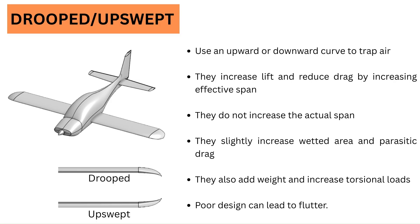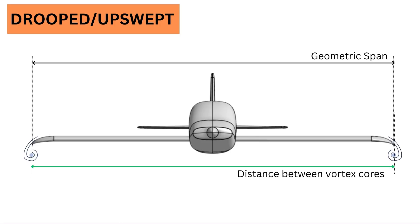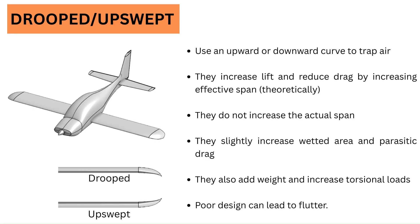Drooped and upswept wingtips: these types of wingtips attempt to trap the air with a tip that is curved upward or downward. Theoretically, they increase lift and reduce drag by increasing the effective span without increasing the actual span. However, these wingtips do slightly increase the wetted area and hence parasitic drag. They also increase weight, wing torsional loads, and can result in flutter if not carefully designed.